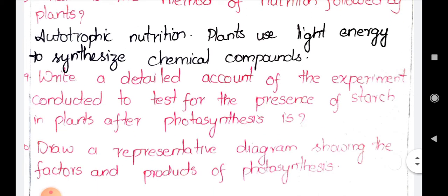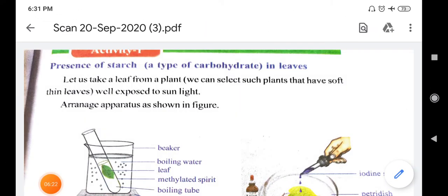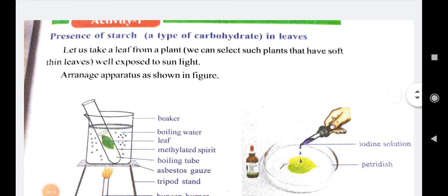The next four-mark question is: write a detailed account of the experiment conducted to test for the presence of starch in plants after photosynthesis. Already I have done a video regarding this and explained it, but I will explain it again. You can see it in the picture here. The presence of starch can be demonstrated in this manner.